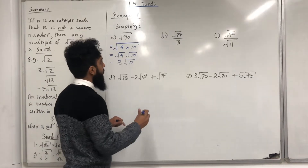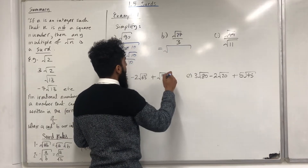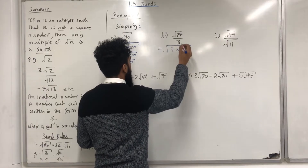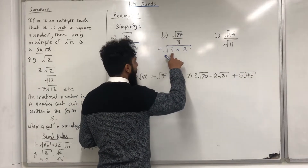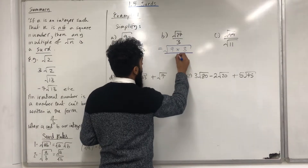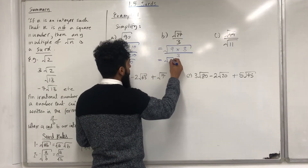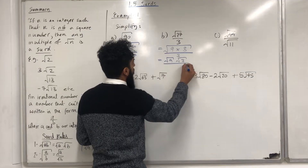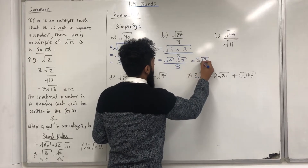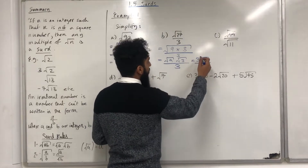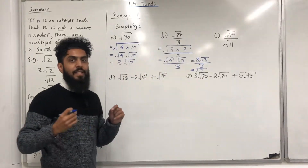Moving on to part b: square root of 27 all over 3. 27 can be written as a product of 9 and 3 — our target is for one number in the product to be a square number, and here 9 is a square number. Using the multiplication rule for surds, this splits into square root 9 multiplied by square root 3, all over 3. Square root of 9 is 3, so we have 3 square root 3 over 3. 3 divided by 3 is 1, so this cancels to give square root of 3, which is in its simplest form.